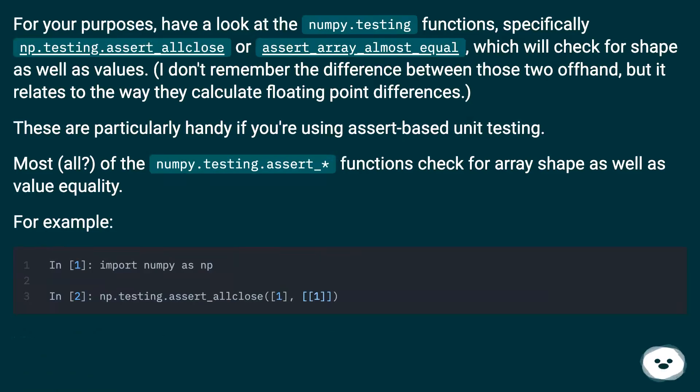For your purposes, have a look at the numpy.testing functions, specifically np.testing.assert_allclose or assert_array_almost_equal, which will check for shape as well as values. I don't remember the difference between the two offhand, but it relates to the way they calculate floating point differences.